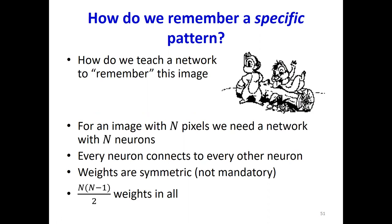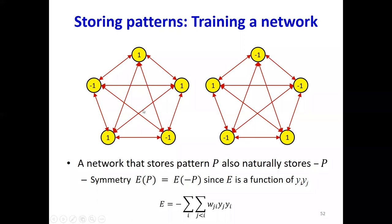How do you teach the network to remember Chip and Dale? For an image with n pixels — this is probably something like a 300x300 or 400 image, so about 1.2 million pixels — a network would have 1.2 million neurons. Every neuron connects to every other neuron because this is a Hopfield network. The weights matrix is symmetric, which means there are n times (n-1) over 2 weights in all.